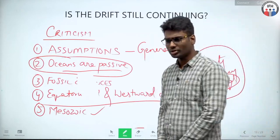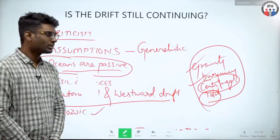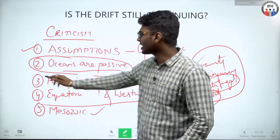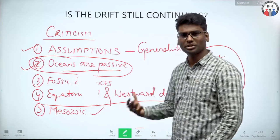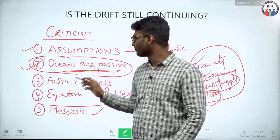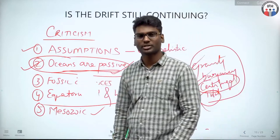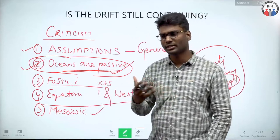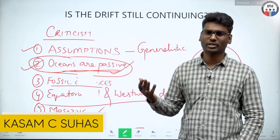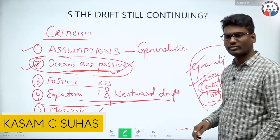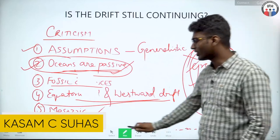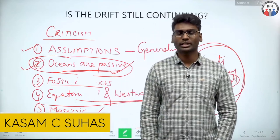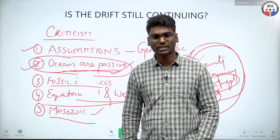The forces behind were buoyancy, gravity, centrifugal force, and tidal force. Evidence included: the jigsaw fit of coastlines, mountain chains of the same age on both sides, rock age similarities on the Brazil and African coasts, fossil evidences, vegetation evidence, placer deposits, and tillite deposits. Critics said his theory was based on assumptions, the ocean was not passive, fossils were found elsewhere too, the forces were insufficient to drift continents, and he couldn't explain why the split happened in the Mesozoic era. This is all about the continental drift theory. We will look into the next topics — seafloor spreading theory and plate tectonics — in upcoming lectures.